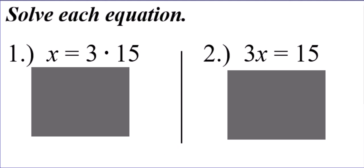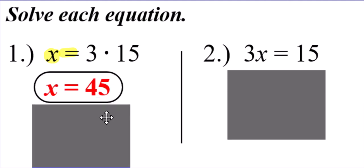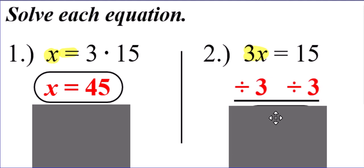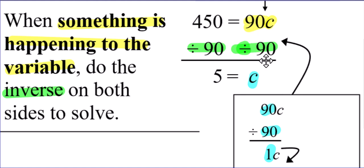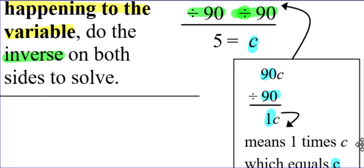You'll get the hang of this once we do some other examples together. Let's start with number 1 — pencils in your hand. Let's do 1 and 2 together. What's happening to the variable? On number 1, nothing is happening to the variable — it's already by itself, just next to an equal sign. So all we're going to do is take 3 times 15, which is 45. Number 1, super easy. But number 2 is a little bit different. The variable x is next to a 3, which means it's being multiplied by 3. So to get that x by itself, we have to do the inverse — divide by 3 on both sides — giving us x by itself, and 15 divided by 3 gives us 5.